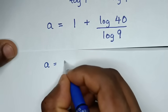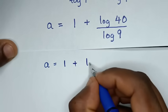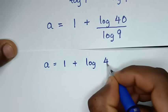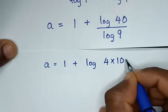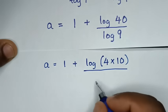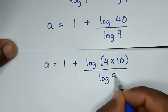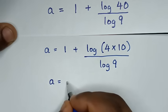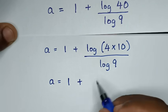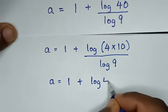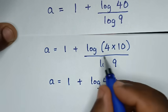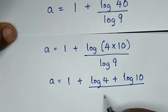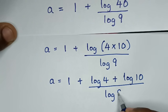Then in the next step, it will be a is equal to 1 plus log of 40. Now 40 is the same as 4 times 10, then bracket over log of 9. So it will be a is equal to 1 plus log of 4 plus log of 10, over log of 9.